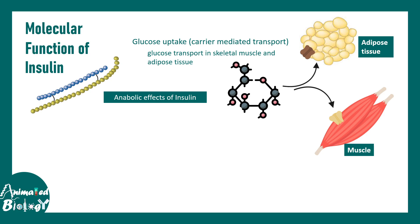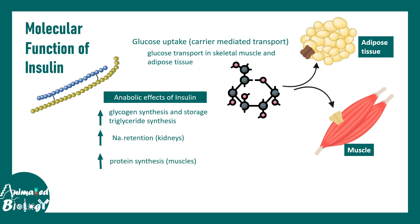Insulin is a master regulator of anabolism — at a molecular level it builds things up. It increases glycogen synthesis, converting glucose into glycogen, a more storable form. It leads to sodium retention in the kidneys, increased protein synthesis via the mTOR pathway, and increased uptake of potassium ions and amino acids.